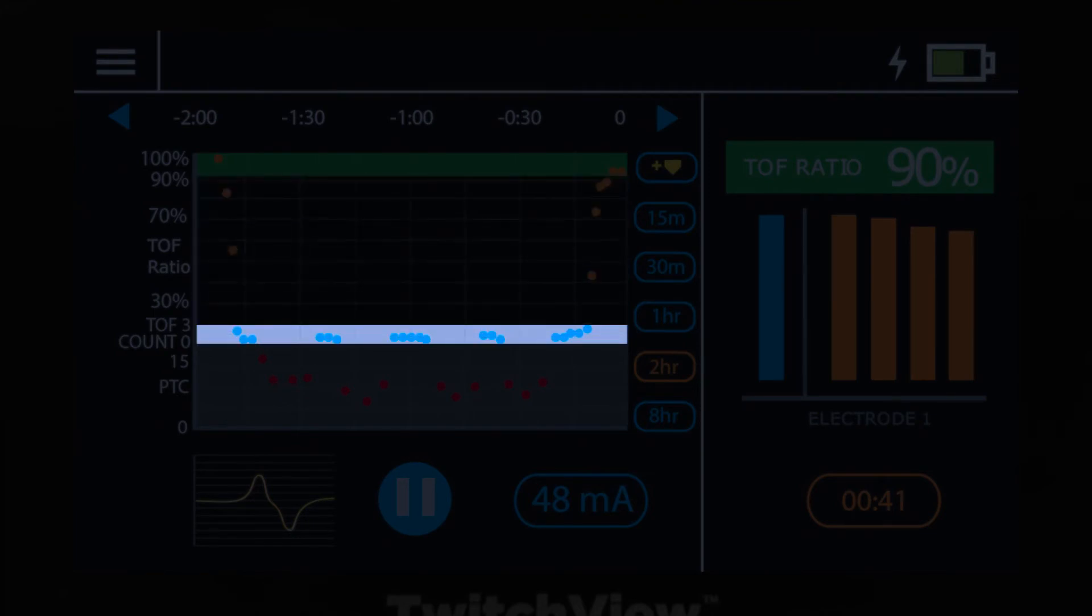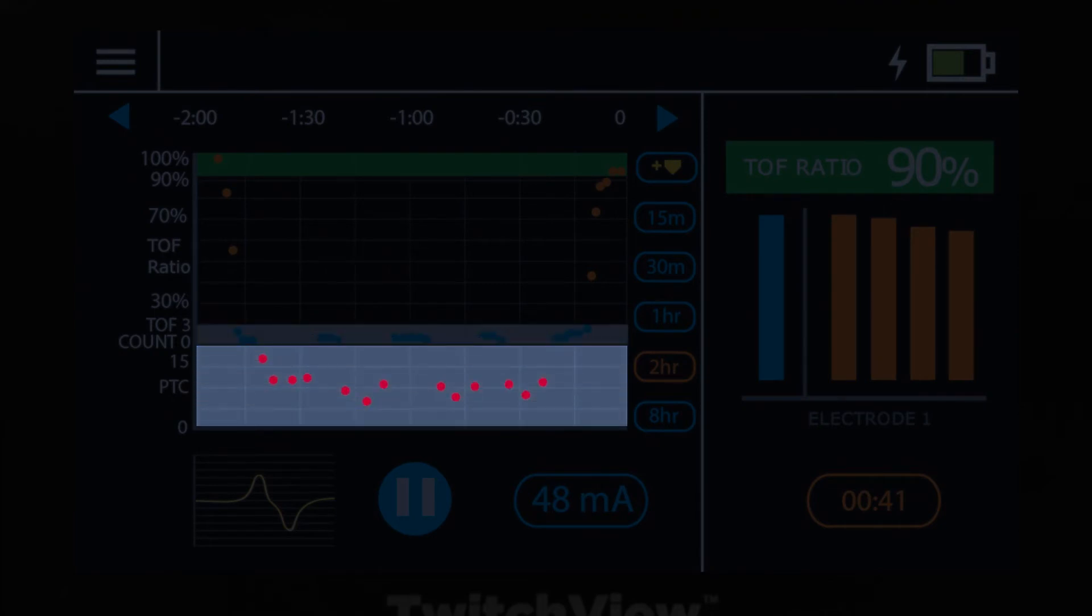Light gray represents a TRAIN-4 count between 0 and 3, and dark gray represents a post-tatanic count measurement.